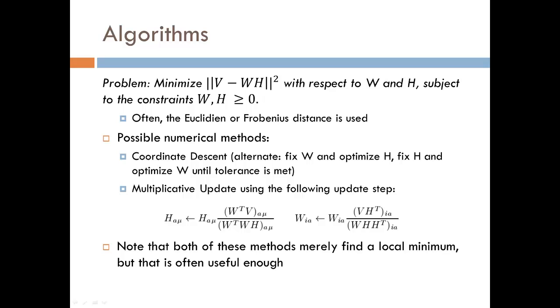So the black box up to this point has taken in a matrix V and returned W and H. How is this done? We are trying to solve the following problem: minimize the squared distance of V minus W times H with respect to W and H, subject to the constraints that W and H must be non-negative. Often, the distance metric used by researchers here is the Euclidean or Frobenius distance.